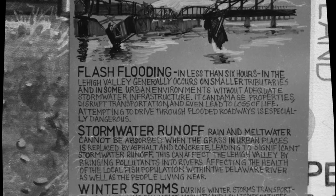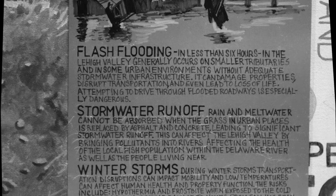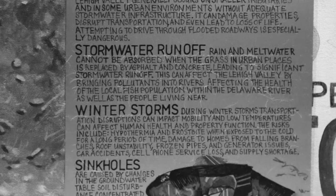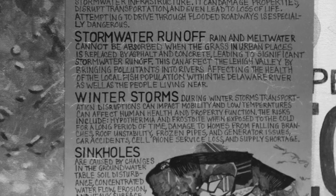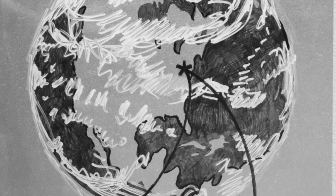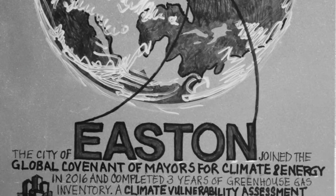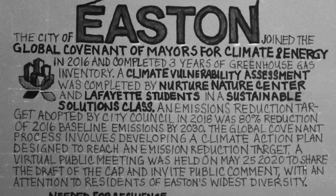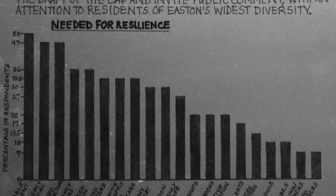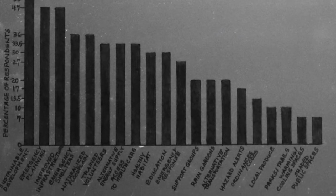The history of coal and how that has caused most of our hazards that we are dealing with now — warming, flooding. Then on the fourth panel, it's about Easton joining with the globe, because this is a global problem at this point.